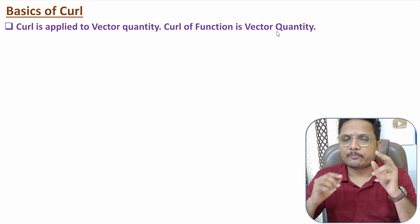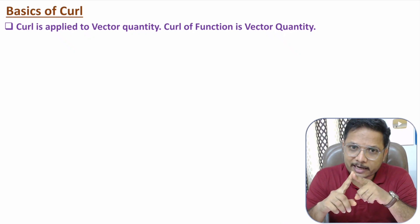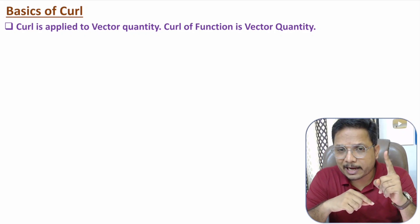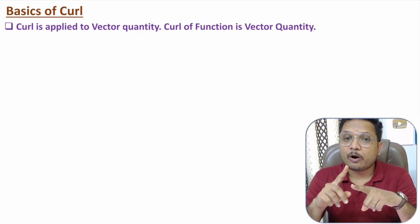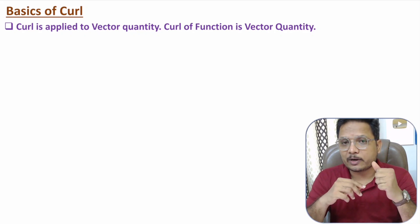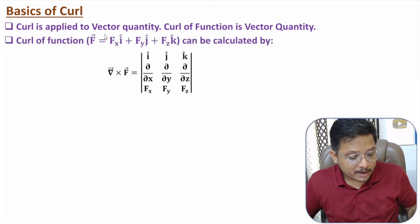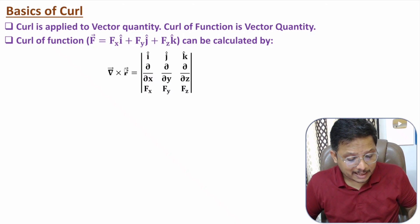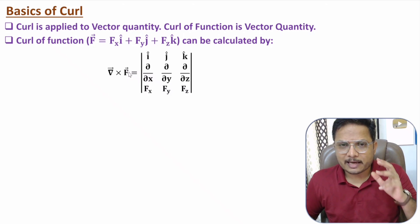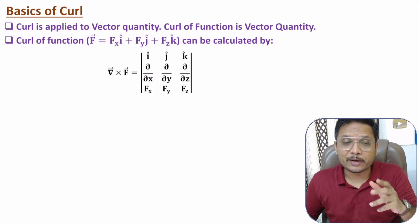Here are the basics to remember: gradient is applied on a scalar quantity and after gradient we have a vector quantity; divergence is applied on a vector quantity and after divergence we have a scalar quantity; curl is applied on a vector quantity and after curl we have a vector quantity. If you have a vector function F, then curl of F is del×F, which is the matrix determinant of [I, J, K; del/delX, del/delY, del/delZ; Fx, Fy, Fz]. Using curl of function we can identify variation in function along with direction.